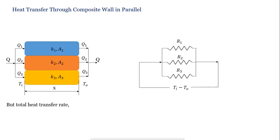But the total heat transfer rate, Q, will equal to Q1 plus Q2 plus Q3. And Q equal to Ti minus To upon Sigma R.